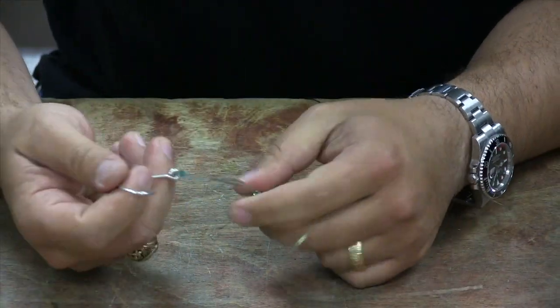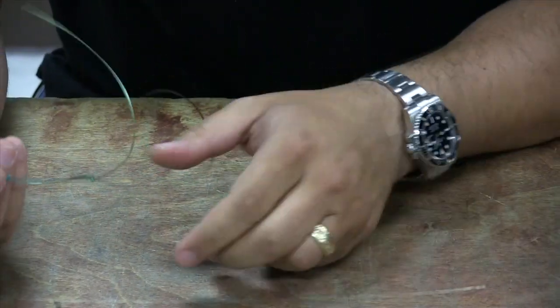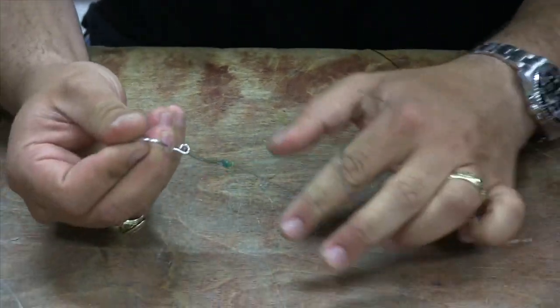Pull that tight. Now, as I pull this, one will pull to the other. We have our loop knot.